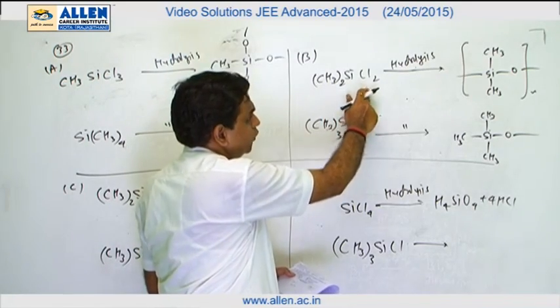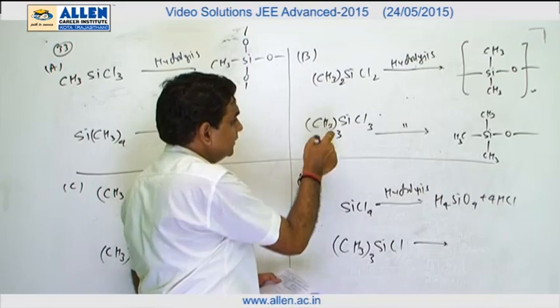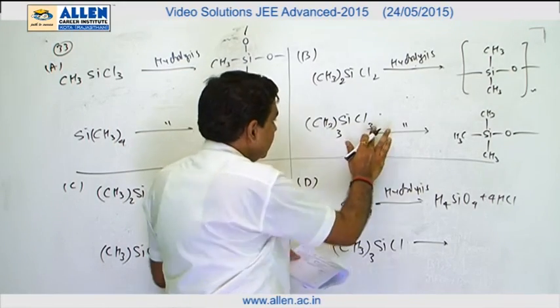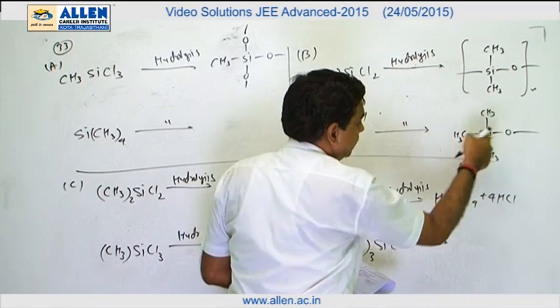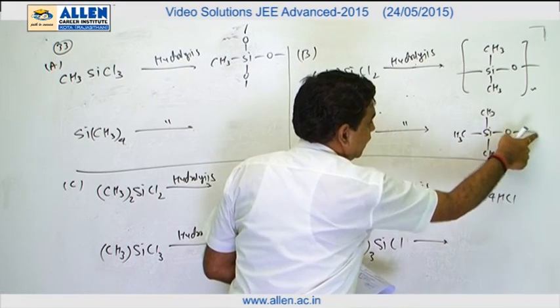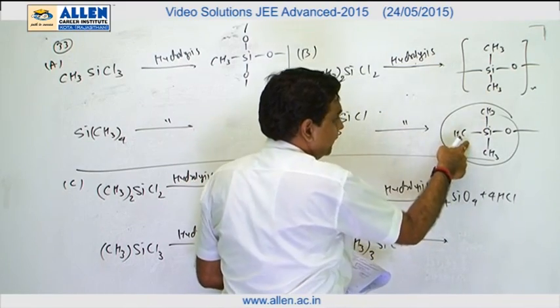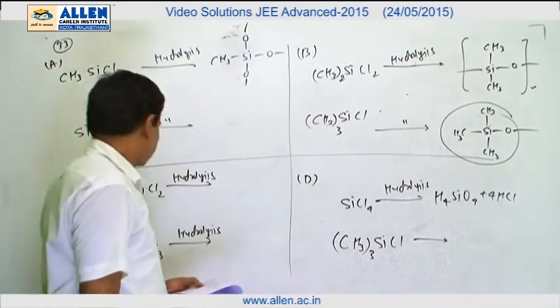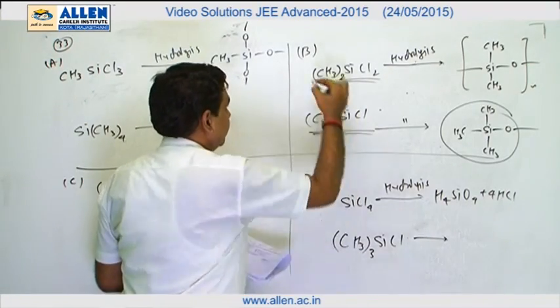(CH3)2SiCl2 upon hydrolysis produces linear polymer. When this undergoes hydrolysis it produces chain terminating unit. When it connects with any polymeric chain it is terminated due to the formation of this group at the end of chain. That means it produces linear polymer and is a chain termination unit.